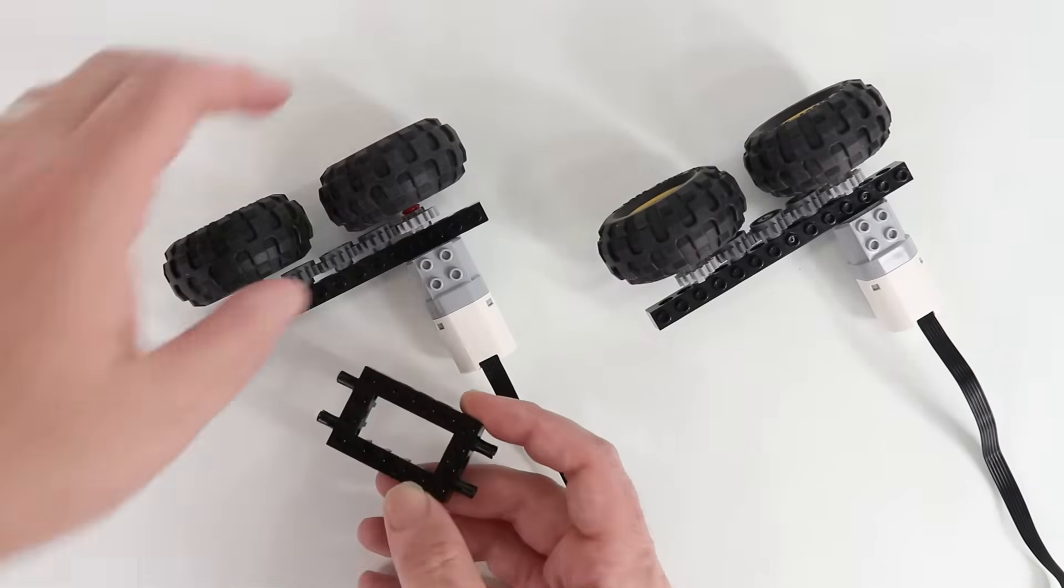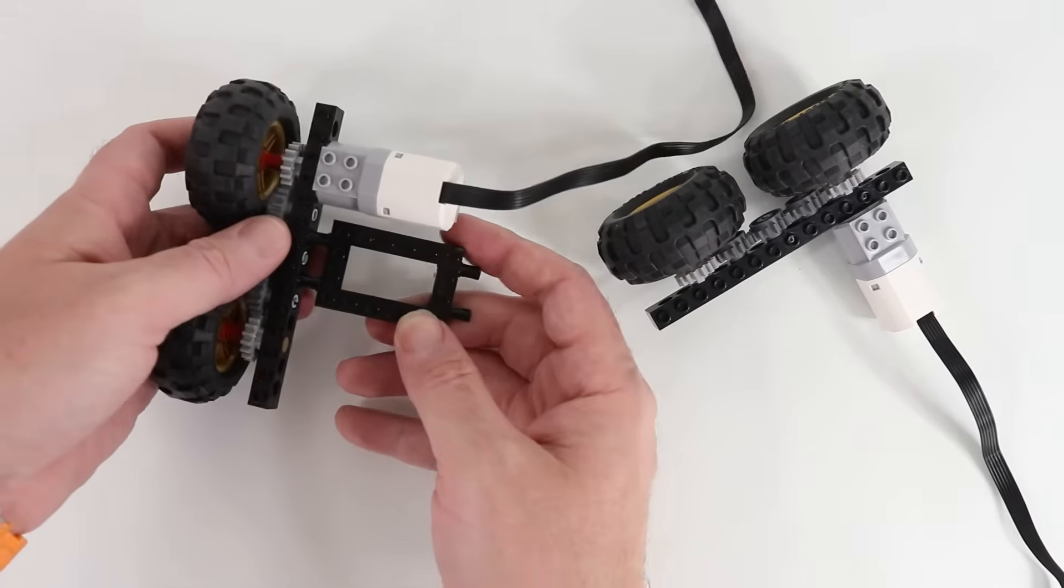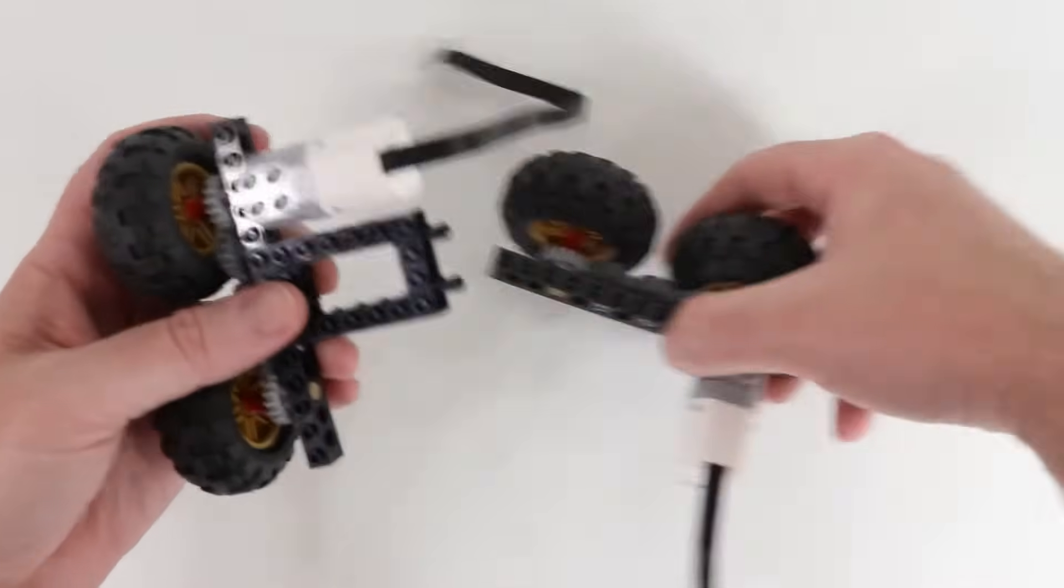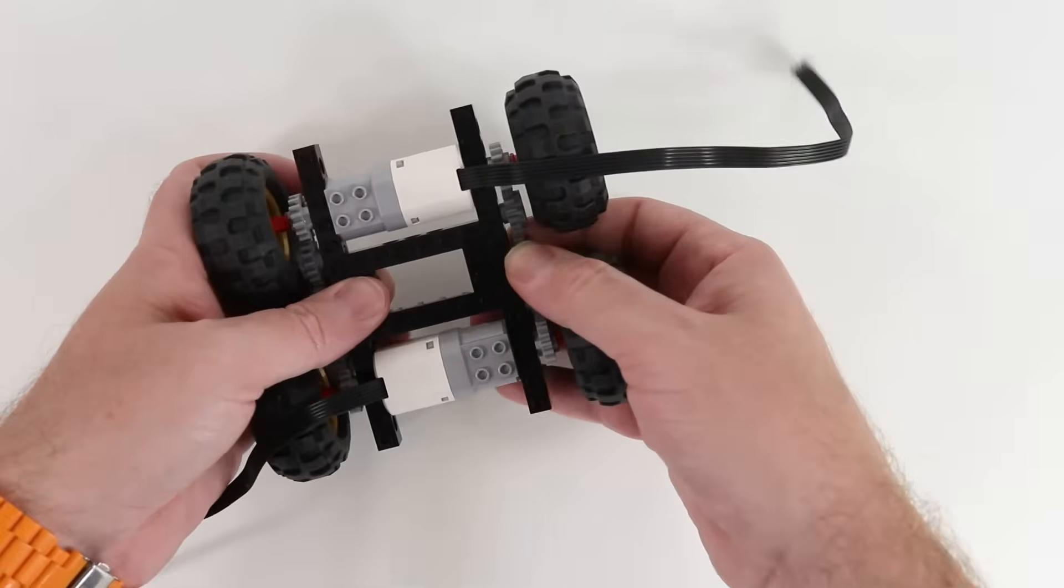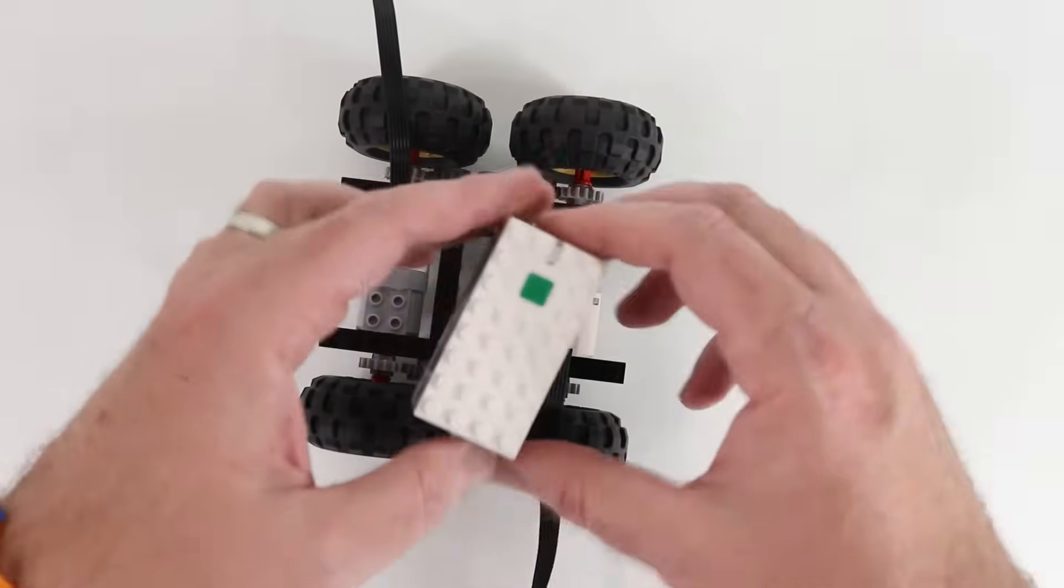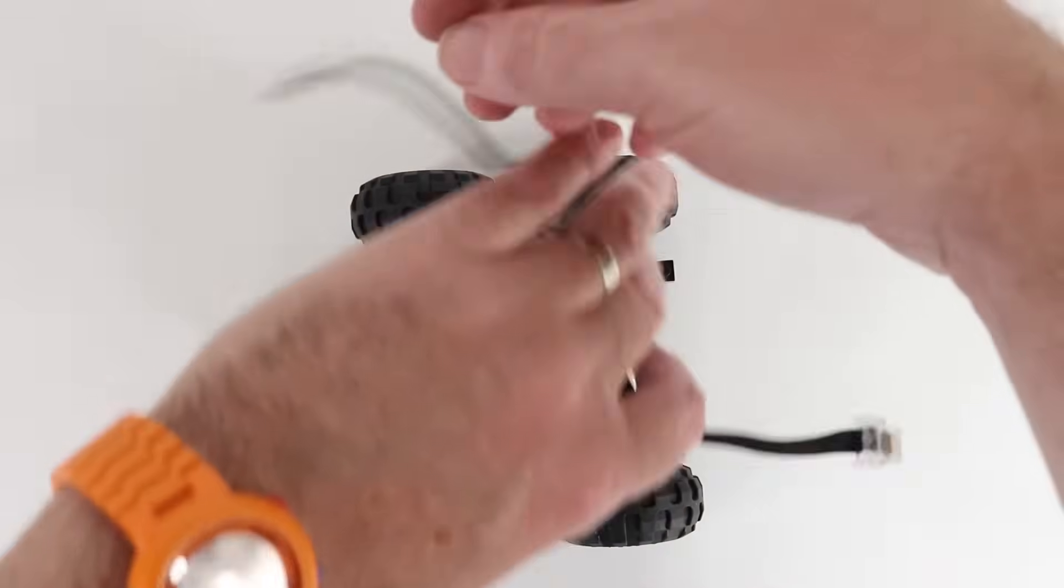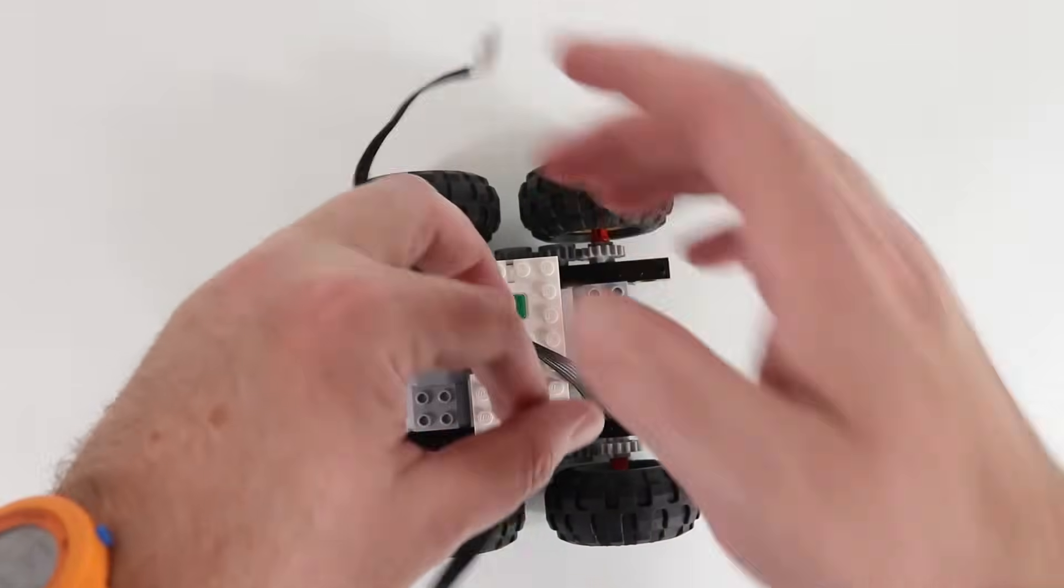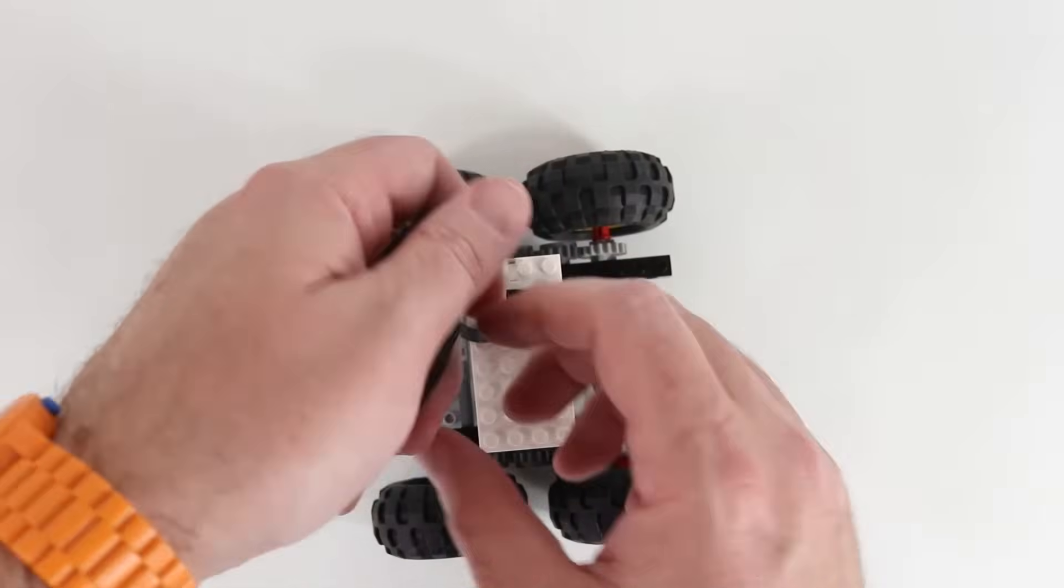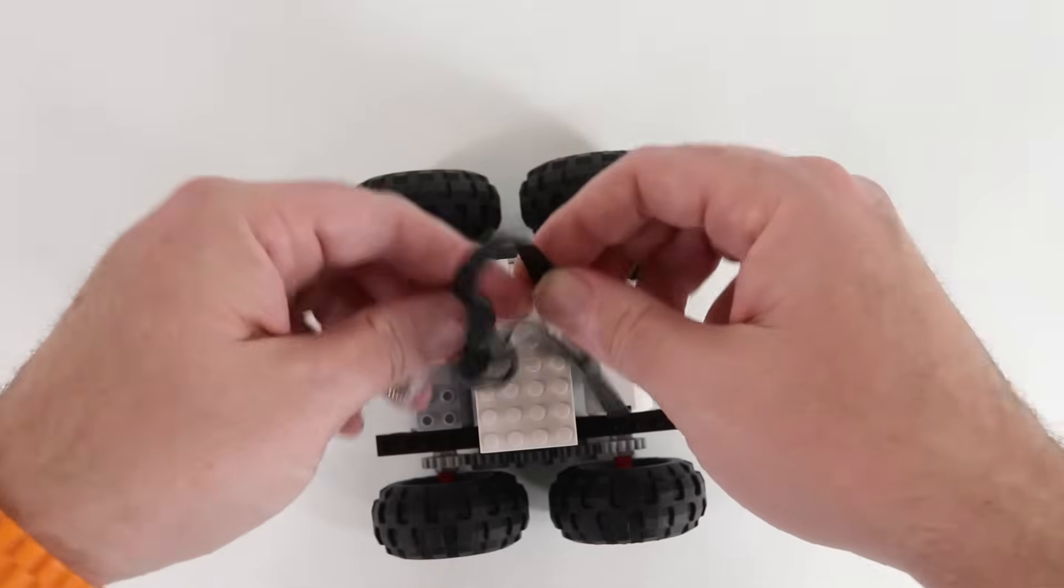And we're going to take that 4x6 Technic brick that we started with, clip it into this side over here, clip it into this side over here. And then we take our brick battery box. It goes right in the middle there. And then I'm going to kind of twist up the wires so that they don't get bound up in the gears or the wheels. And I'll just kind of manage the cable up there a little bit.